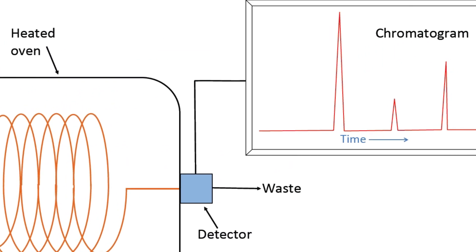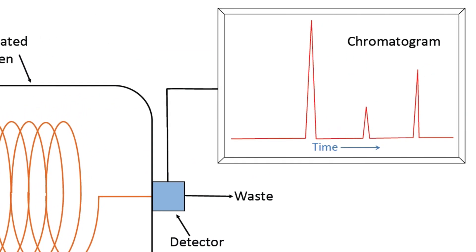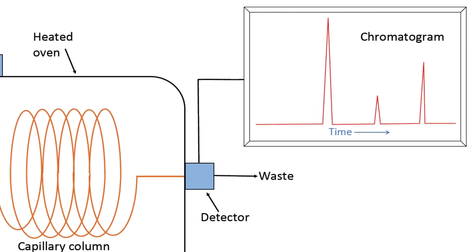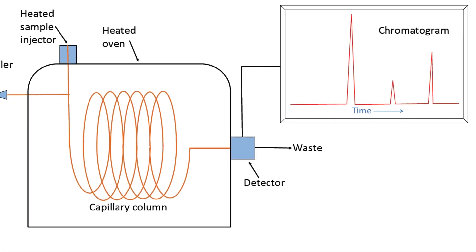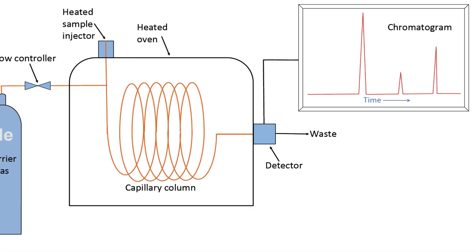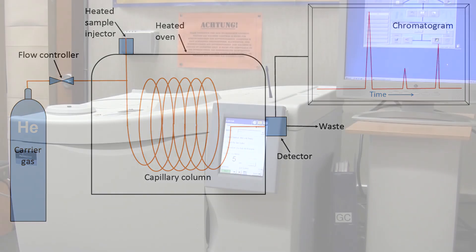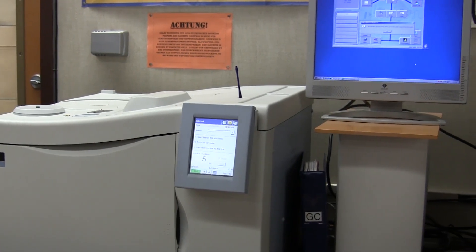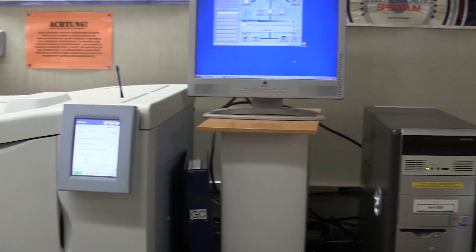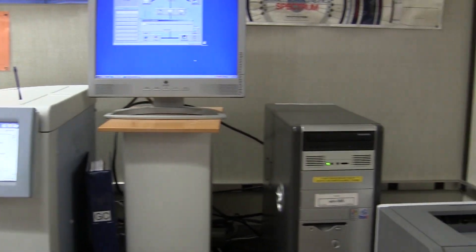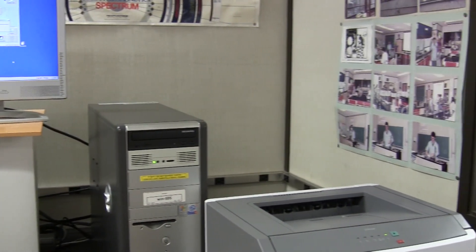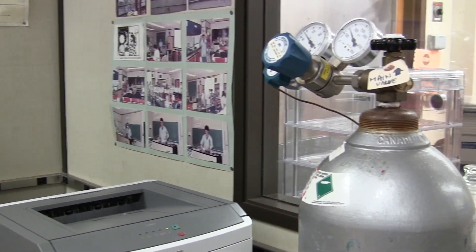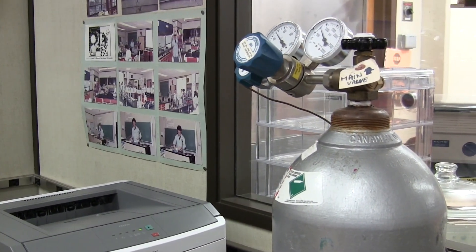The signal appears on the chromatogram. In this diagram, we can see that three components of the mixture have been detected as shown on the chromatogram. And here we see again our setup: the CLARIS 500 GC, the PC which runs the operating software, the printer for obtaining hard copy of chromatograms, and the carrier gas.